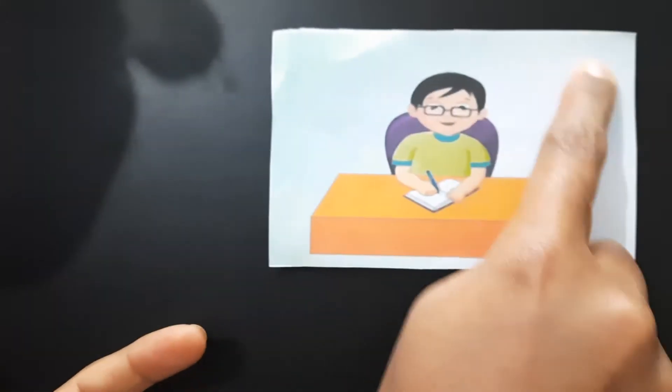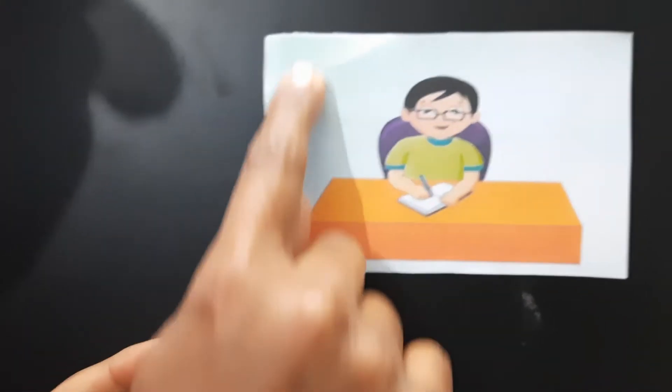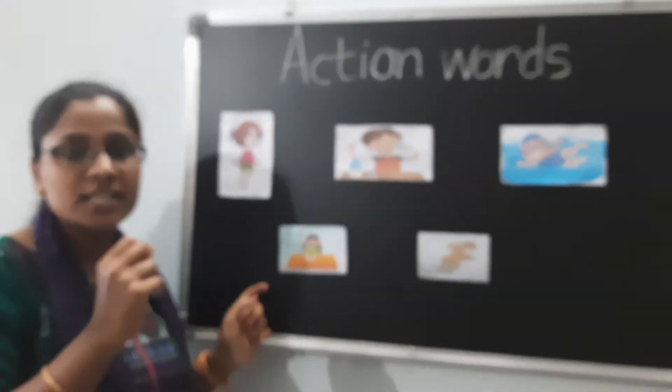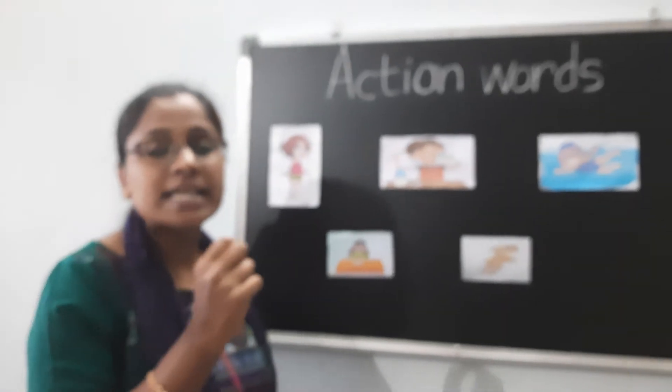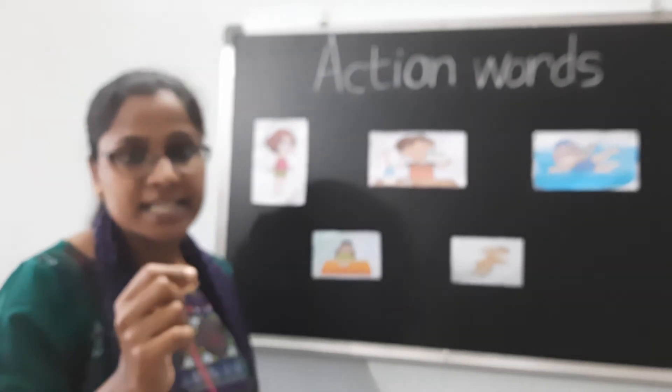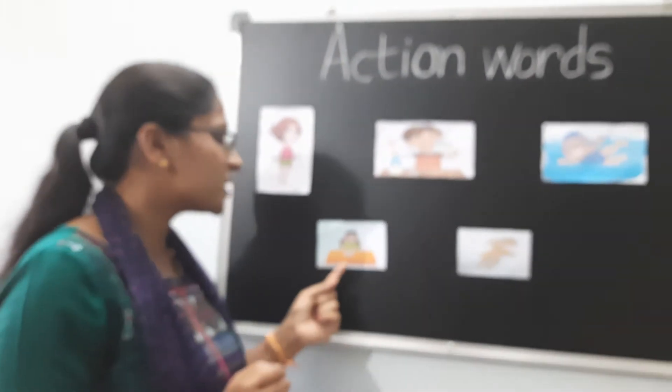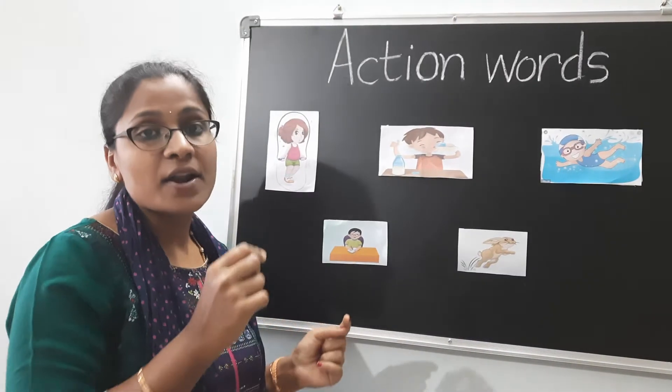What is the fourth picture we have here? Writing. What is he doing? He is writing. The action word here is writing.